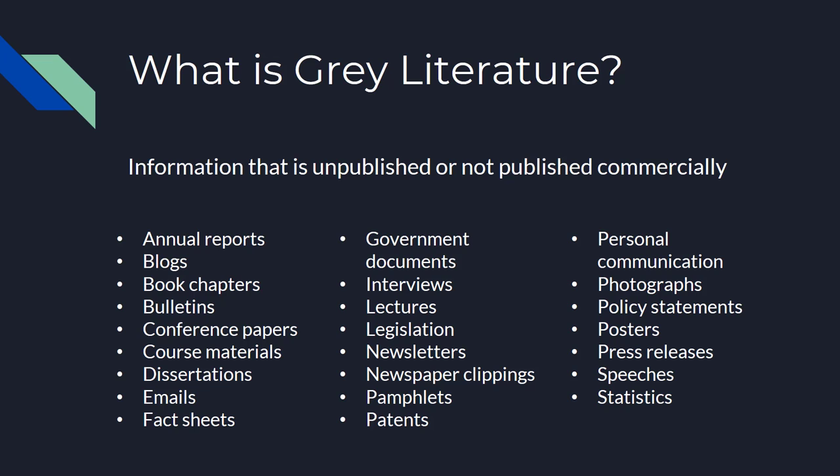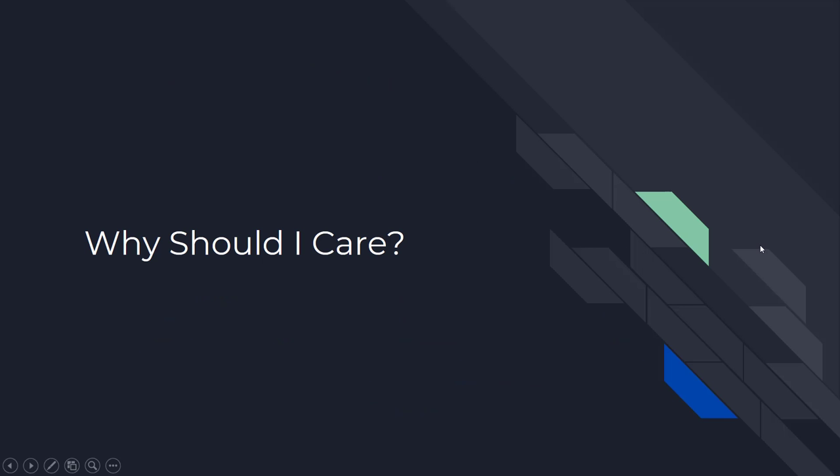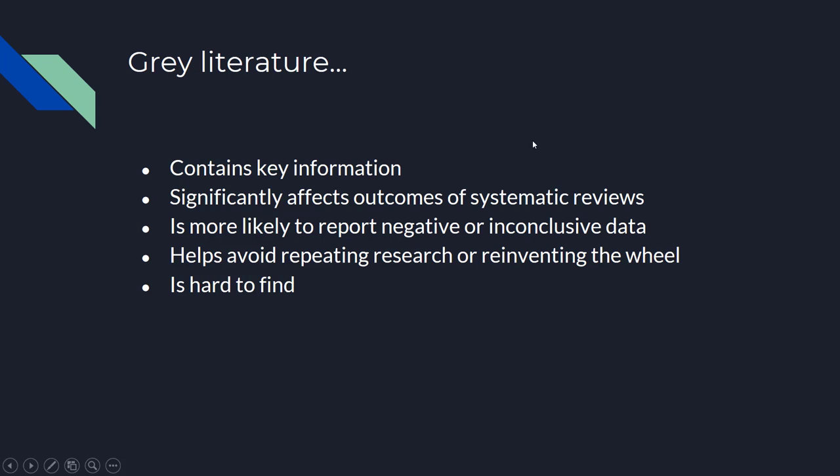However, there is a lot of information out there in gray literature that can be really important. Why should you care? Gray literature contains key information that has not yet been published. It significantly affects outcomes of systematic reviews. Gray literature is more likely to report negative or inconclusive data — it's a lot easier to get your paper published if you're showing good results. But to get an actual view of what is going on in the field, you probably have to look at gray literature to see the results that aren't getting published but give a better look at what has actually been found. Looking for gray literature also helps you avoid repeating research or reinventing the wheel.